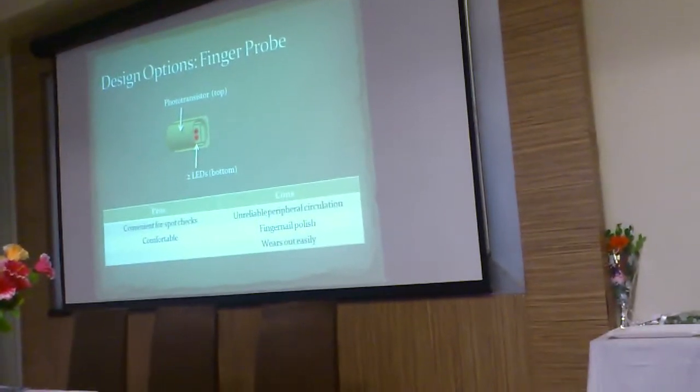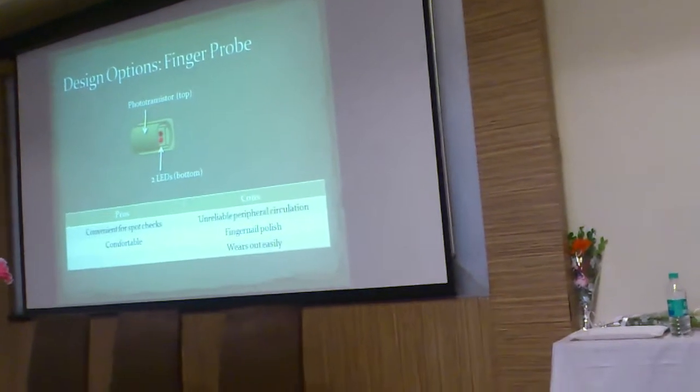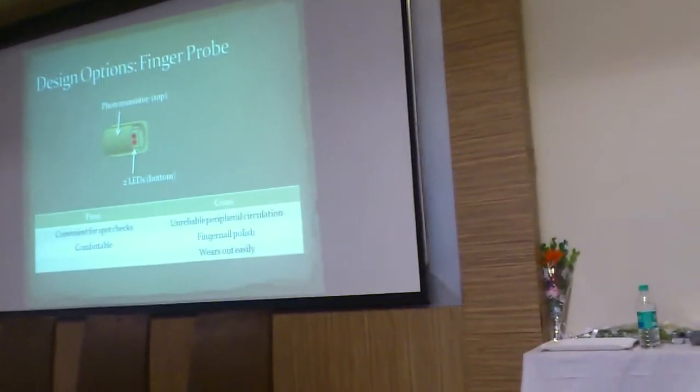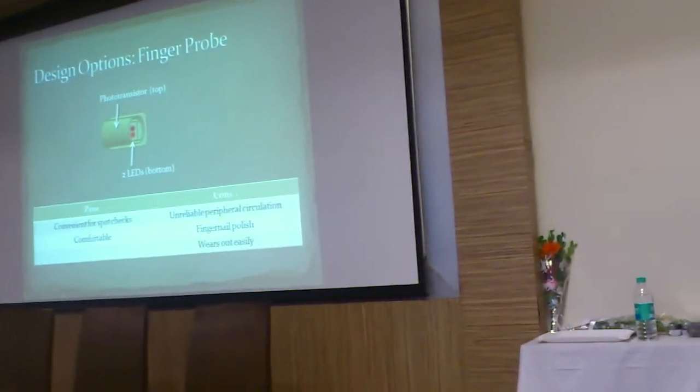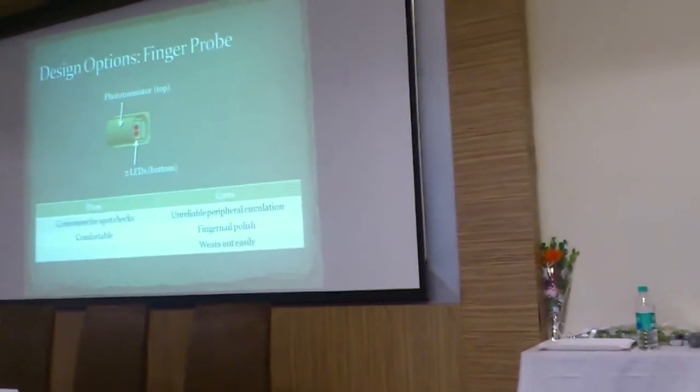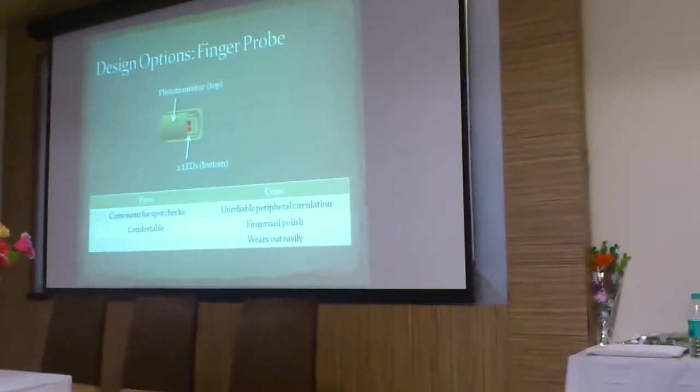This is your two LEDs — red and infrared. Infrared is not visible. The phototransistor is at the bottom and the infrared LED is at the top. You put it like this — two LEDs at the top and a common detector below, which is a silicon photodiode. Pros: convenient for short checks. Cons: unreliable peripheral circulation, and fingernail polish is a problem. Girls are advised to remove nail polish when hospitalised — they will also cut your nails if they are long, because you cannot put a finger clip sensor on a long nail. And the sensor wears off easily due to scratches on the detector surface.